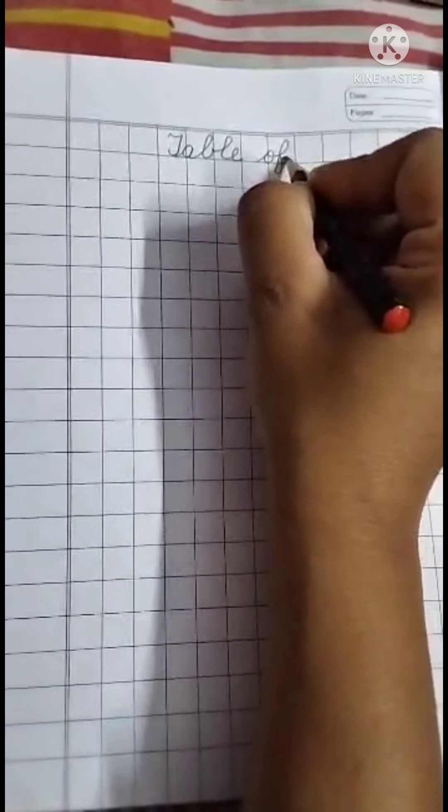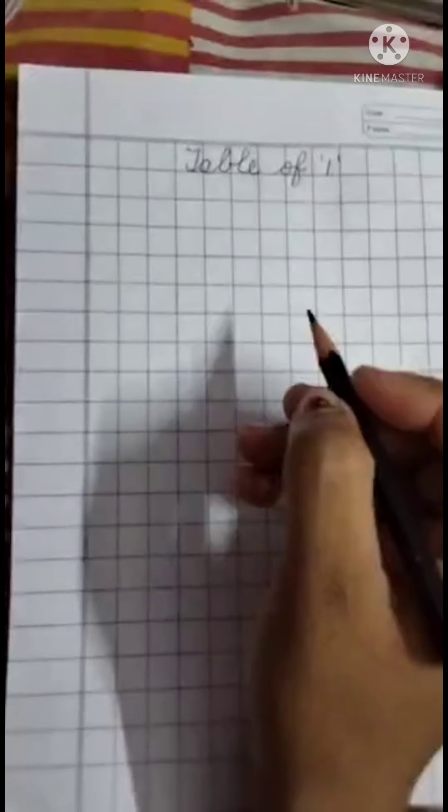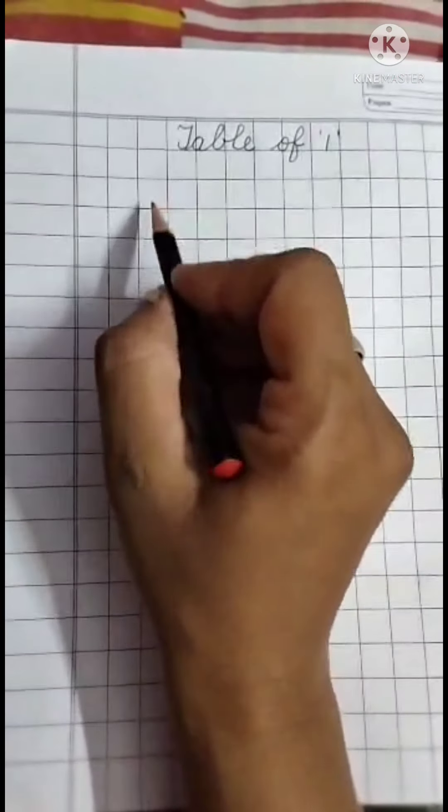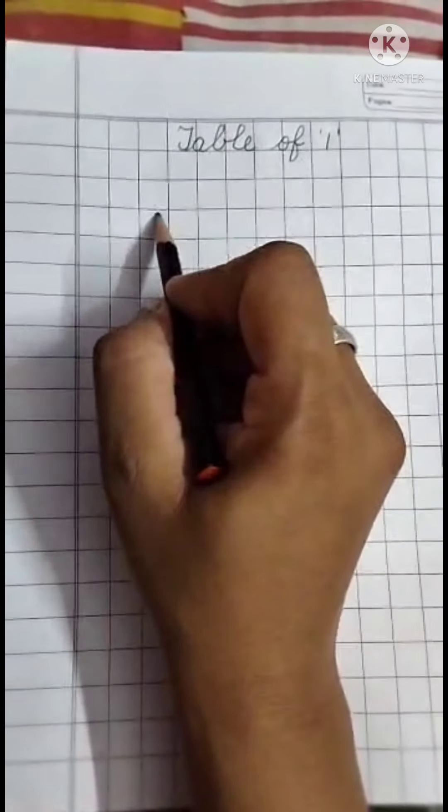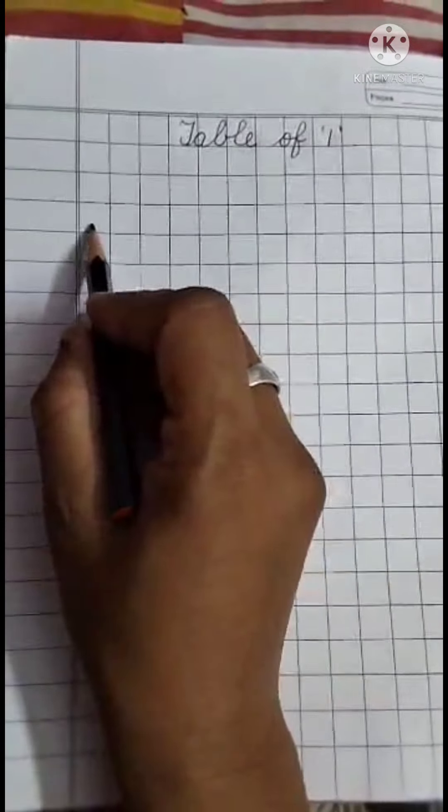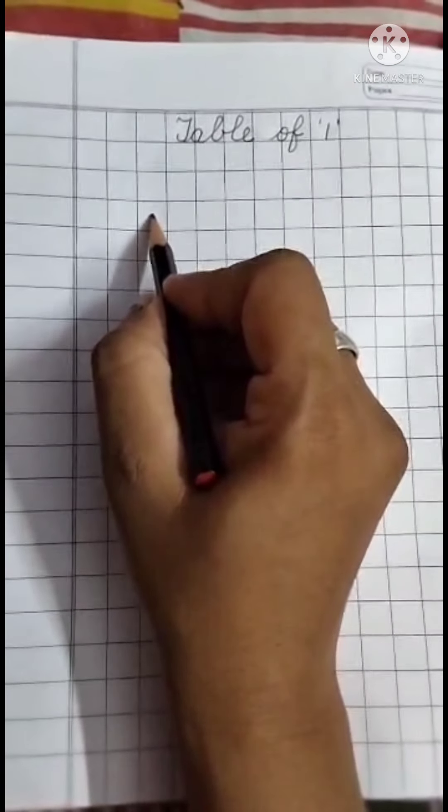O, F, off. One. Table of one. Now you have to leave two lines, one, two after heading. We have to start from here. Okay. From this box.